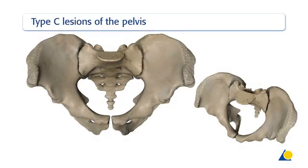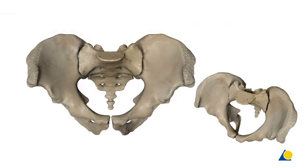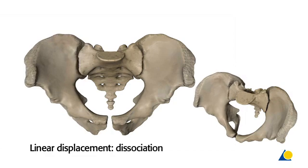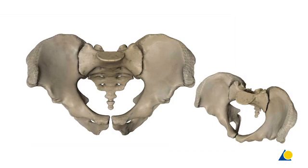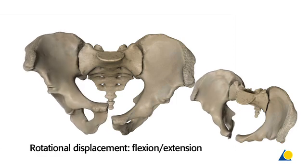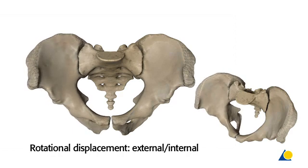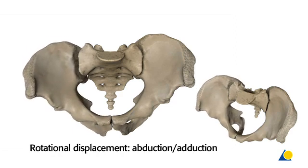In type C lesions of the pelvis, there is a combined anterior and posterior lesion which allows the involved hemipelvis all degrees of freedom. There are three axes of linear displacement and three axes of rotational displacement possibilities and all combinations. Linear displacement can be posteriorly, cranially, and can be dissociation. Rotational displacement includes flexion-extension, external-internal rotation, and abduction-adduction.